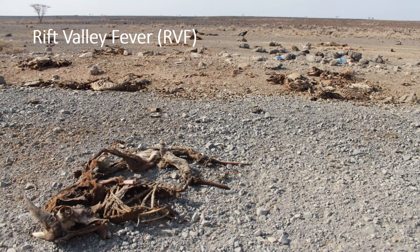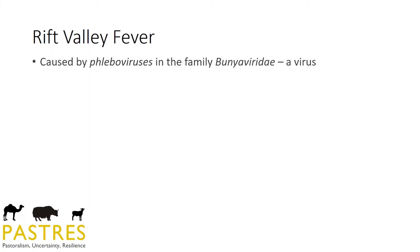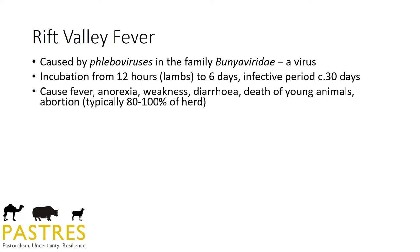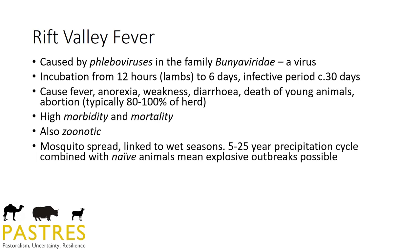Moving to rift valley fever, which is a virus — part of a bigger family of viruses. It has a 12-hour incubation period, compared to 4 to 40 days for tryps, yet it's another agent which is similarly non-specific. You typically get 80 to 100% abortion in a herd with rift valley fever. That doesn't necessarily mean all the adults die, but we're now seeing the effects of a disease projected onto productive potential rather than loss of animals specifically. There's a high morbidity and mortality rate, and it is also zoonotic.